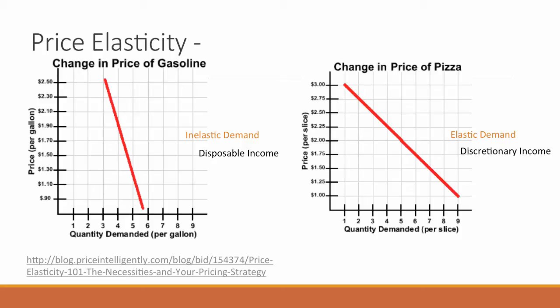One might ask: which is more affected by changes in the economy — products with inelastic demand or products with elastic demand? It goes back to our definition of disposable and discretionary income. Disposable income is income after taxes that is used for necessities, and since these items are necessities they tend to have relatively inelastic demand. Because they're necessities, we still have to buy them even if the price increases greatly.